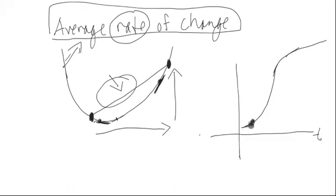Then if we draw a line from here to here, a straight line, the slope of that straight line is like our average speed.